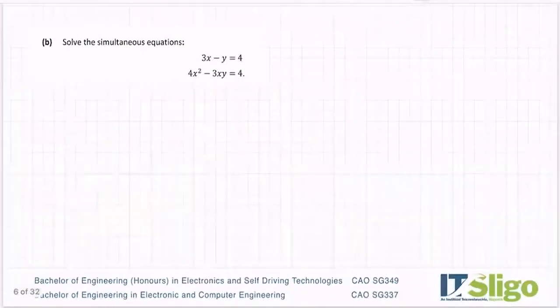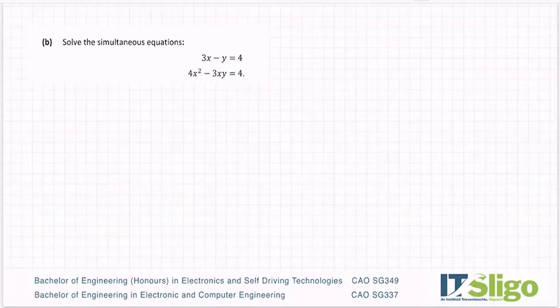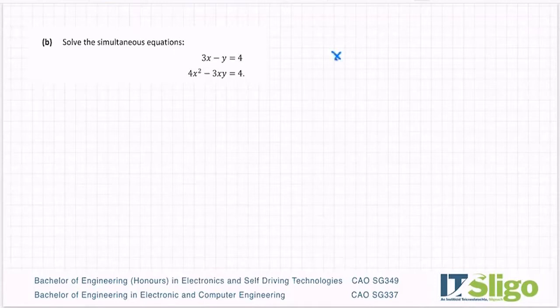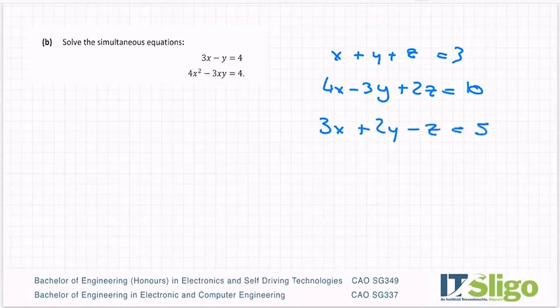Next part. Solve the simultaneous equation 3x minus y equals 4, 4x squared minus 3xy equals 4. So there's a couple of sets or types of simultaneous equations on your course. There's the xyz ones, and these are the xyz ones, and you have to cancel one letter at a time.